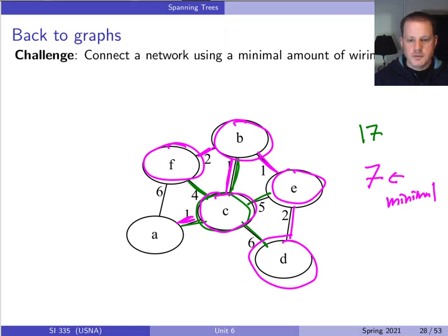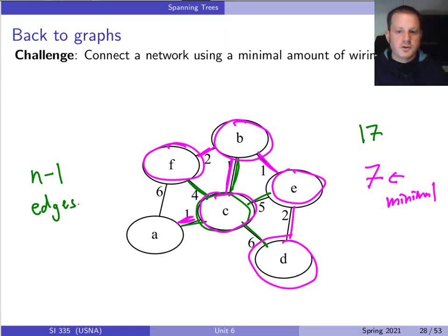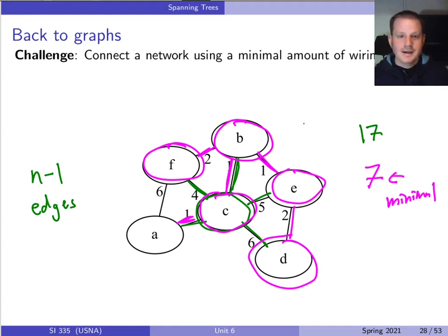Notice that both solutions have the same number of edges: five edges to connect six nodes, i.e., n-1. That's not a coincidence — the minimum number of edges in any connected graph is always n-1. But having the minimum number of edges doesn't guarantee minimal total weight. Our challenge is to find a minimally connected subgraph that also has the least possible total edge weight.